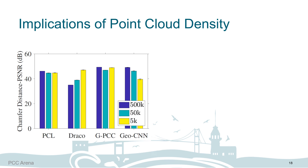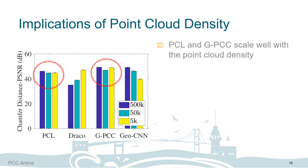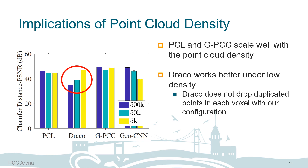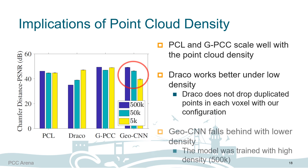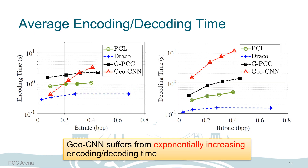We are also interested in the implications of point cloud density. As SP-based PCC algorithms, PCL and GPCC scale well with point cloud density. We notice that Draco's performance goes downhill as density becomes higher, because Draco does not drop duplicate points in each voxel with our configuration. In contrast, GeoCNN performs better with higher density, which might be attributed to the model being trained with high-density data. We show average encoding and decoding time plotted on a log scale, where GeoCNN suffers from exponentially increasing encoding and decoding time.